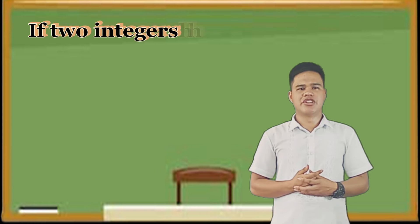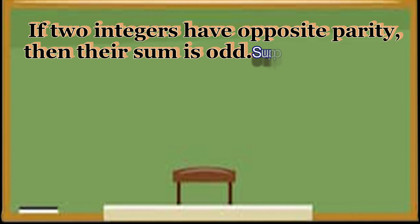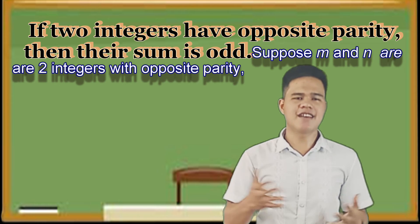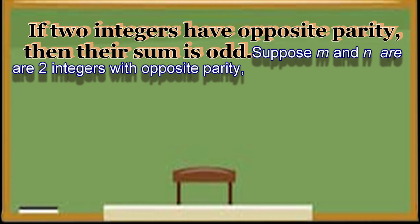Number 2: If two integers have opposite parity, then their sum is odd. Suppose M and N are two integers with opposite parity. So this is direct reasoning.